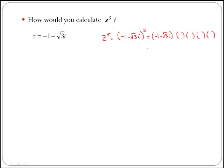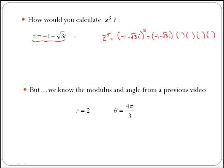You can make that process shorter by thinking about the exponential form of a complex number. We've seen this number in one of our previous videos, where we found the modulus and the angle. We found that the modulus was equal to 2 and the angle was 4π over 3, which means you can write this number as z equals 2 times e to the power of 4π over 3 times i in exponential form.